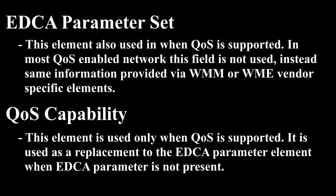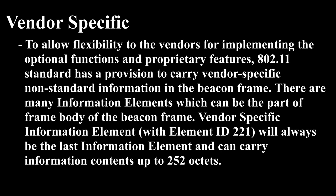EDCA Parameter Set: This element is also used when QoS is supported. In most QoS-enabled networks, this field is not used; instead, the same information is provided via WMM or WME vendor-specific elements. QoS Capability: This element is used only when QoS is supported. It is used as a replacement for the EDCA Parameter element when the EDCA parameter is not present.